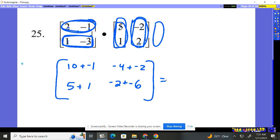Now, just clean it up. 10 plus negative 1 is 9. Negative 4 plus negative 2 is negative 6. 5 plus 1 is 6. Negative 2 plus negative 6 is negative 8. And that is our answer to multiplying those matrices. Let's go.